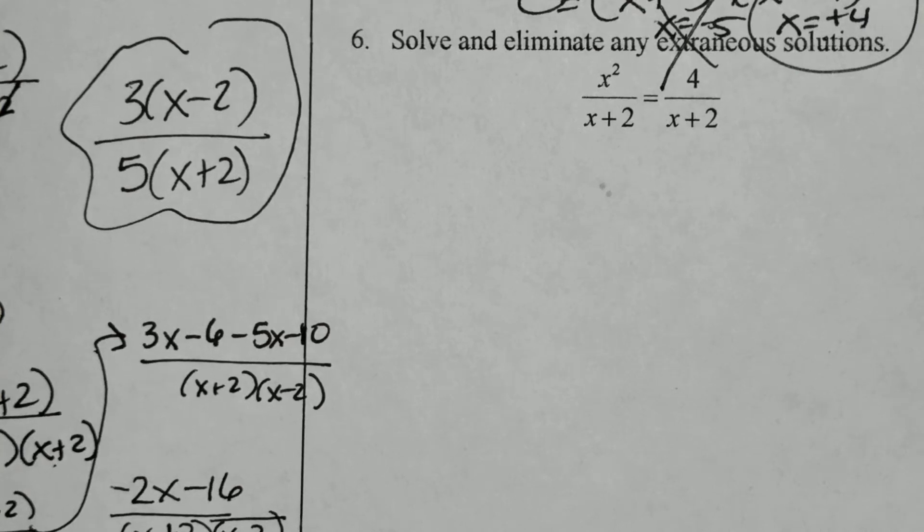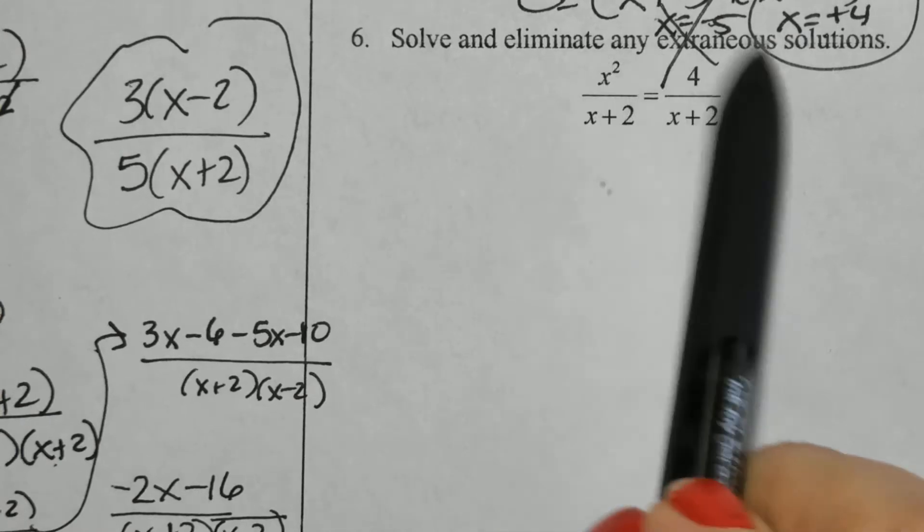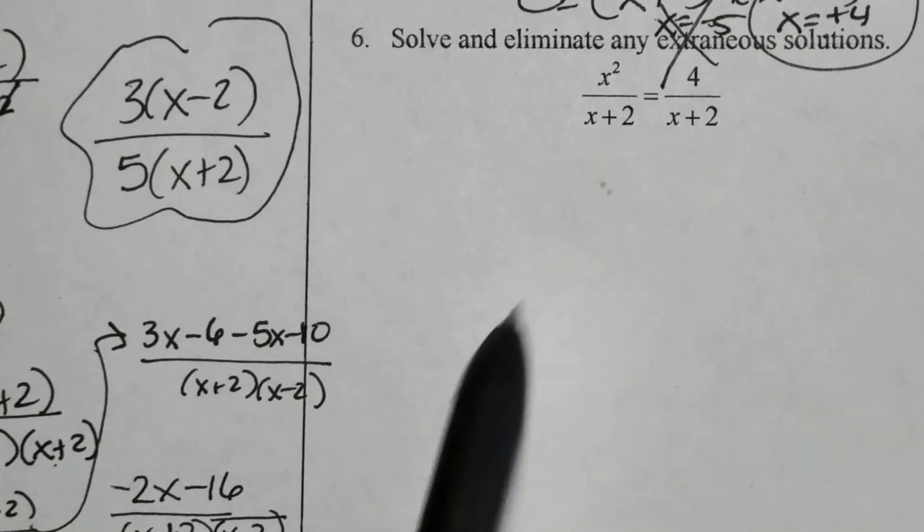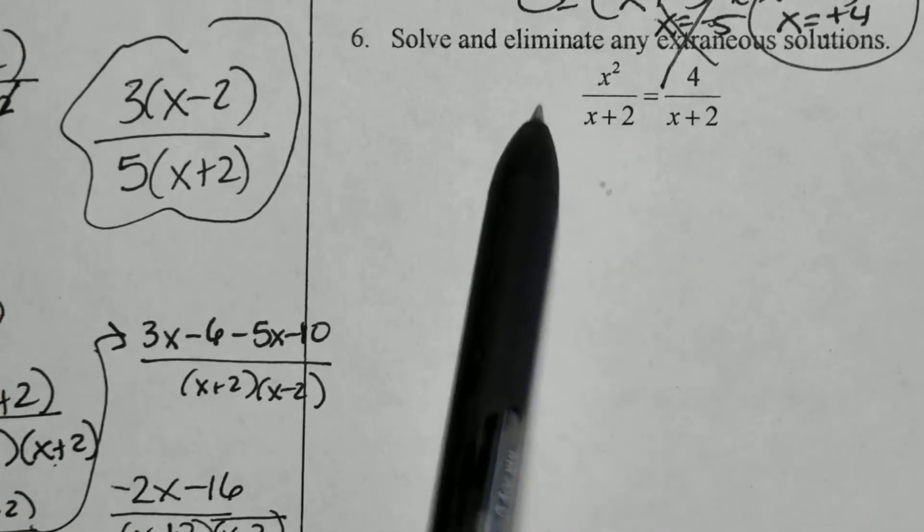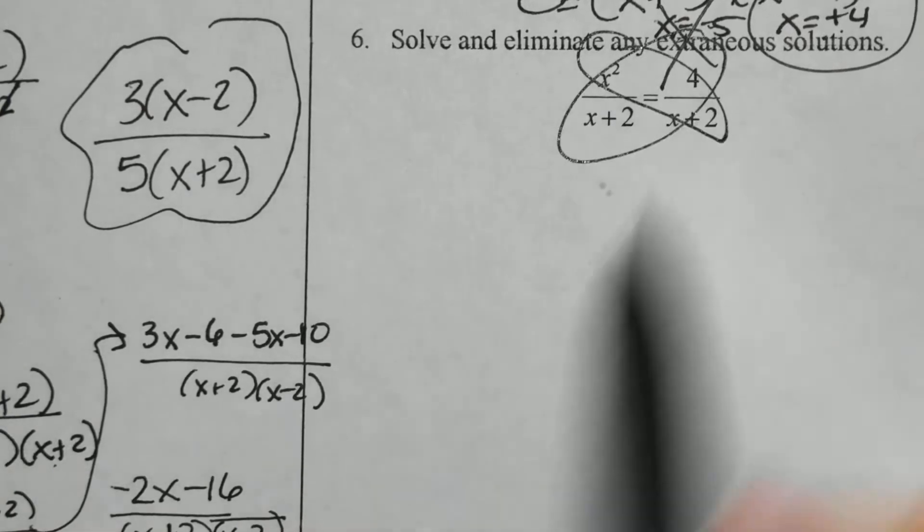This problem looks similar in the setup to number 5, in that we do have two fractions set equal to one another, but there's no additional numbers like a plus 1 or minus 2. So I'm going to use cross-multiplying to solve.